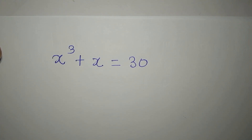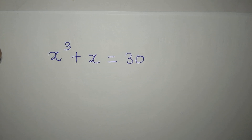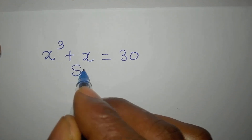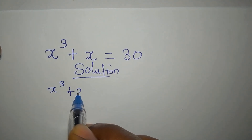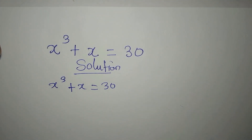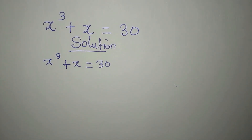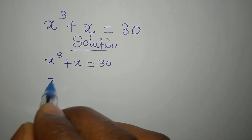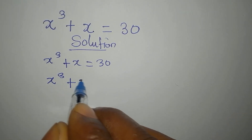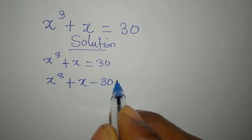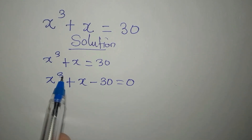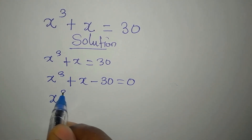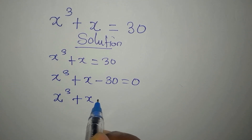Hello everyone, let's provide the solution to this problem very quickly. We are providing the complete solution to x³ + x = 30. What I did is bring 30 to the left, so we have x³ + x - 30 = 0.